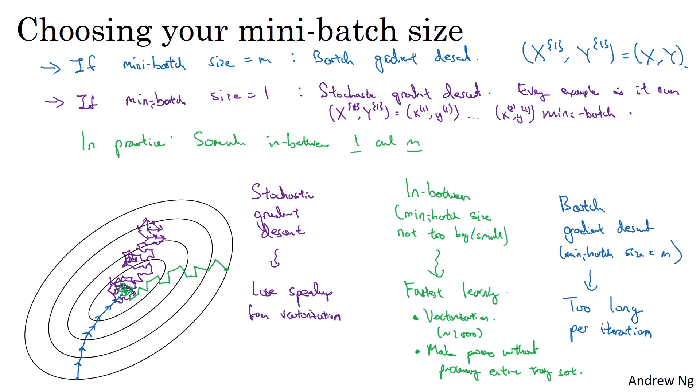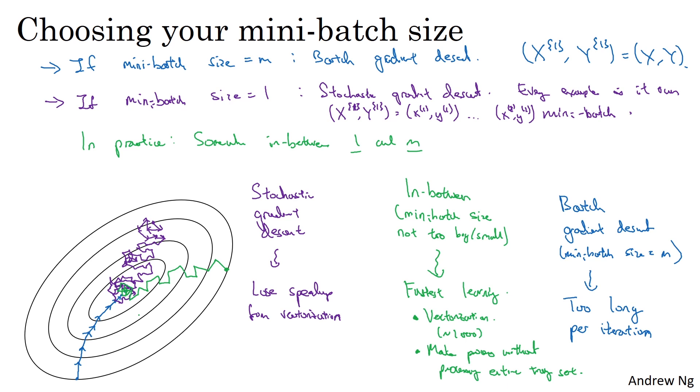So if the mini-batch size should not be m and should not be one, but should be something in between, how do you go about choosing it? Well, here are some guidelines. First, if you have a small training set, just use batch gradient descent. If you have a small training set, there's no point using mini-batch gradient descent. You can process the whole training set quite fast, so you might as well use batch gradient descent. What does a small training set mean? I would say if it's less than maybe 2000, it'd be perfectly fine to just use batch gradient descent.